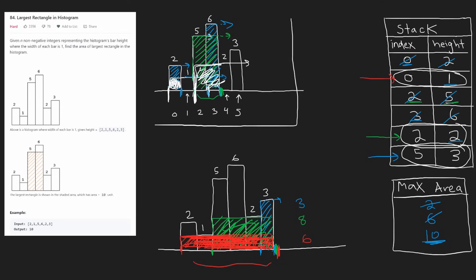With this algorithm, we only had to iterate through the histogram once. We push each element onto the stack once and pop it once. So the overall time complexity is O(N). We also used a stack that could potentially be up to the entire size of the input array, so the memory complexity is also O(N).